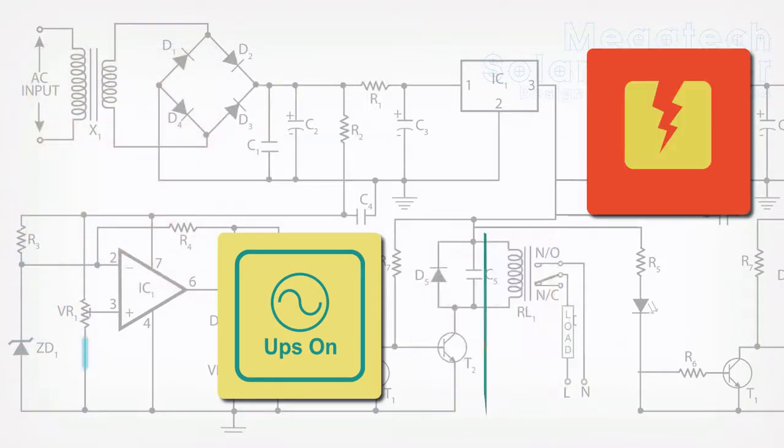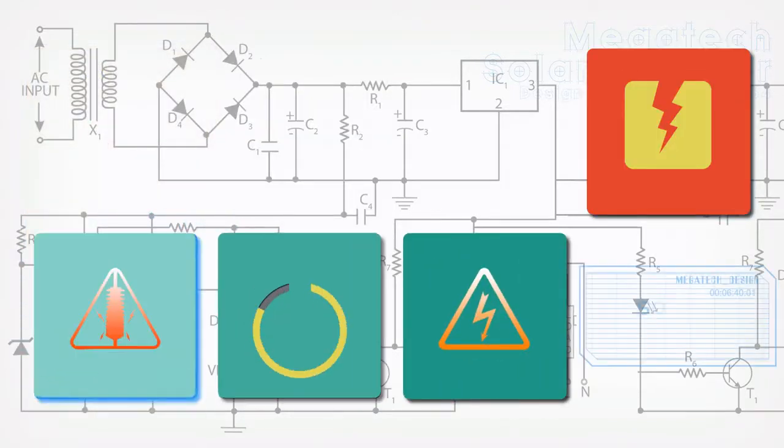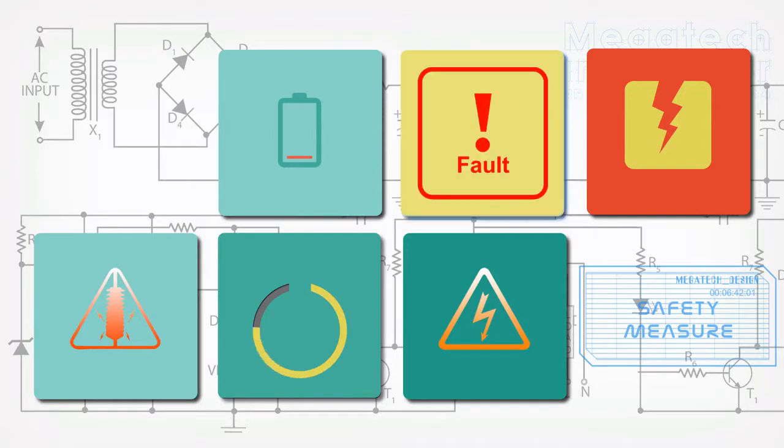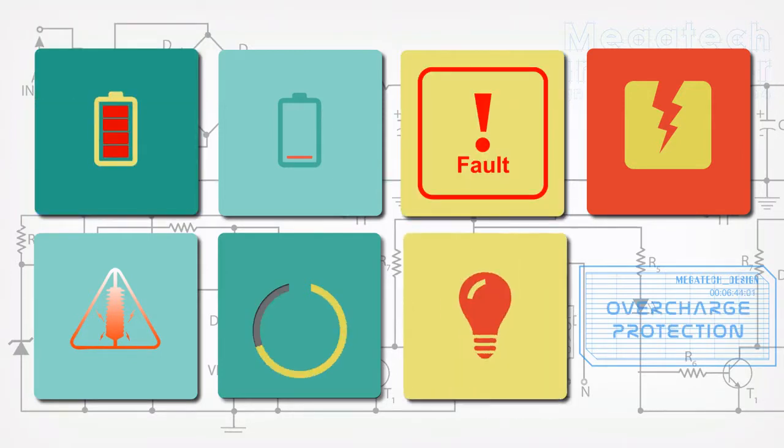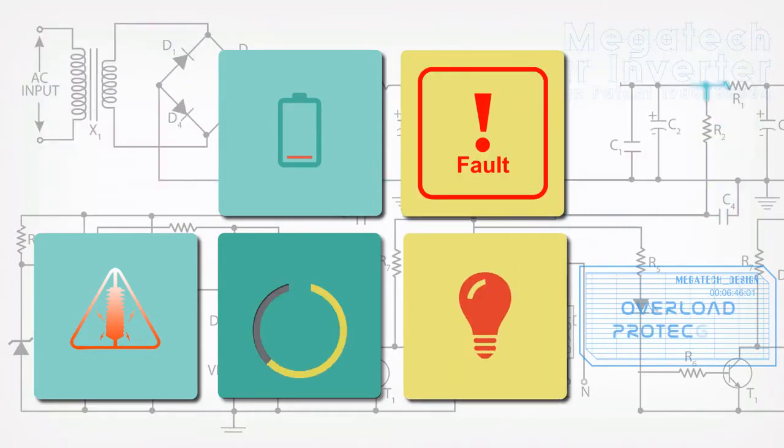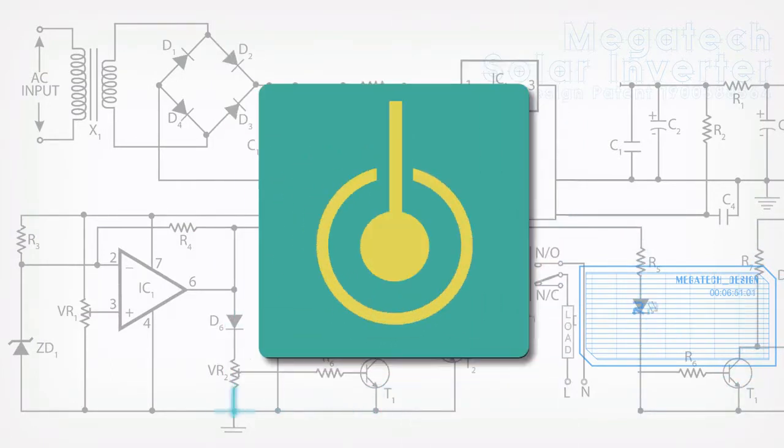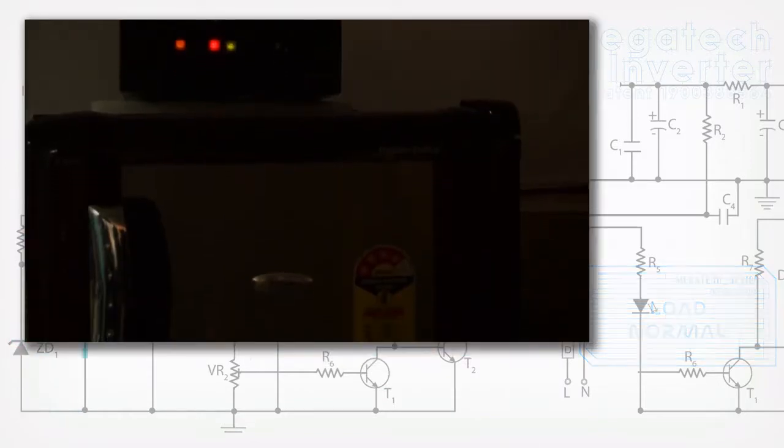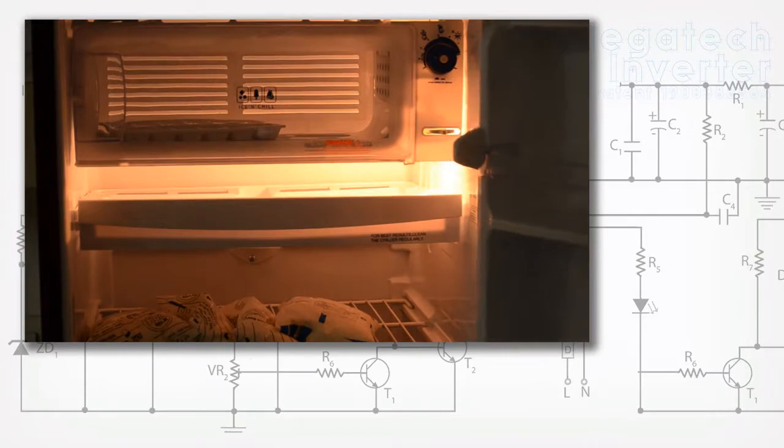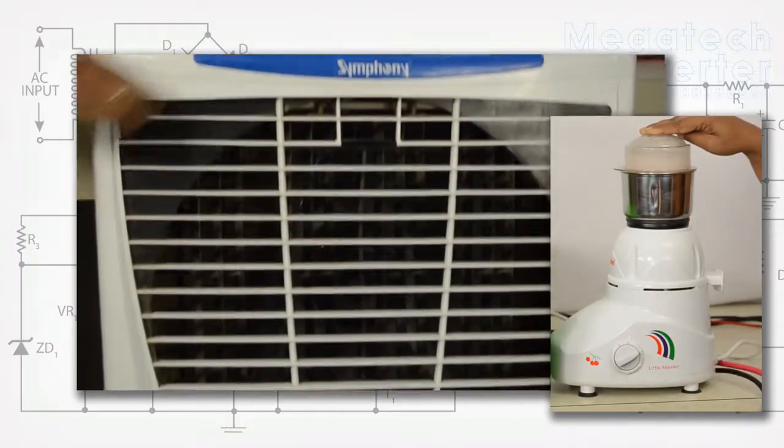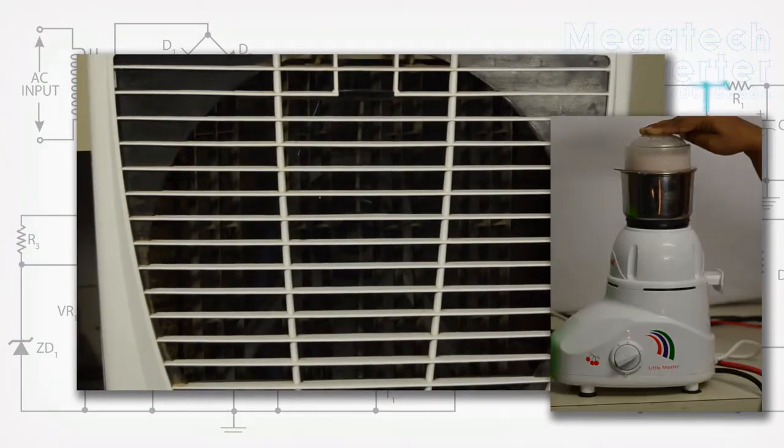At last, here is a power solution that gives you complete peace of mind with built-in protection systems against overcharging, short circuits, and overloading. An auto-reset feature provides an extra measure of safety. The Megatech UPS can reliably handle heavier loads such as refrigerators, room coolers, and mixer grinders, which is a unique feature.